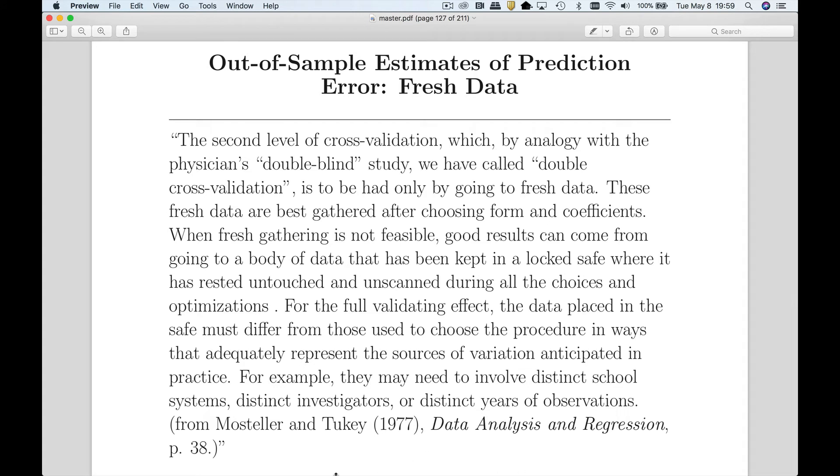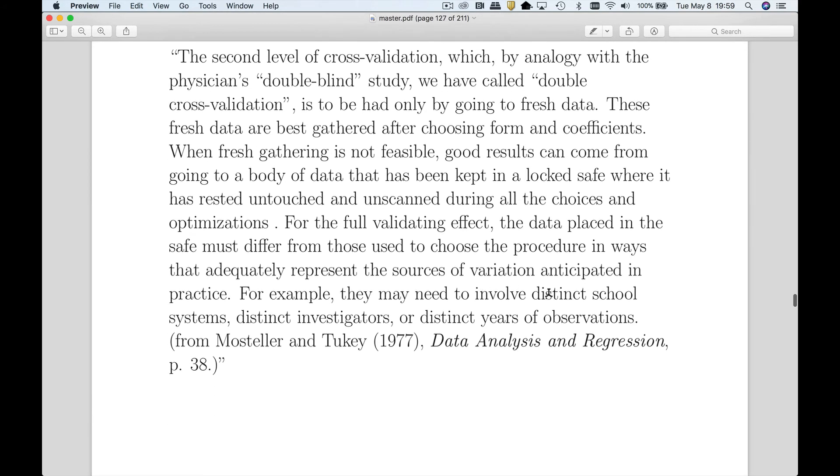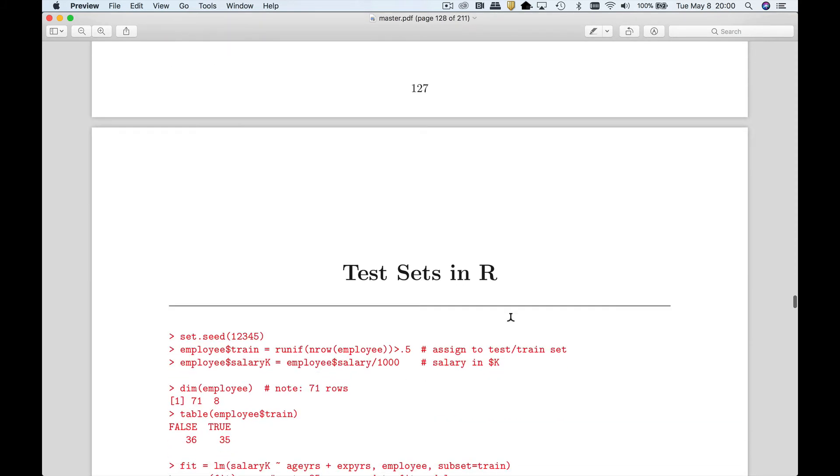Here's a nice quote from John Tukey. This is Mosteller and Tukey's regression book. They mention an additional level of test set, which is what they call fresh data. Fresh data is to be had - you gather new data after you've estimated your model in an ideal world. I'd have some training sample, build a model, then go gather an entirely new set of test questions. They mention they could involve distinct school districts, distinct investigators, or distinct years where I actually gather from the future.